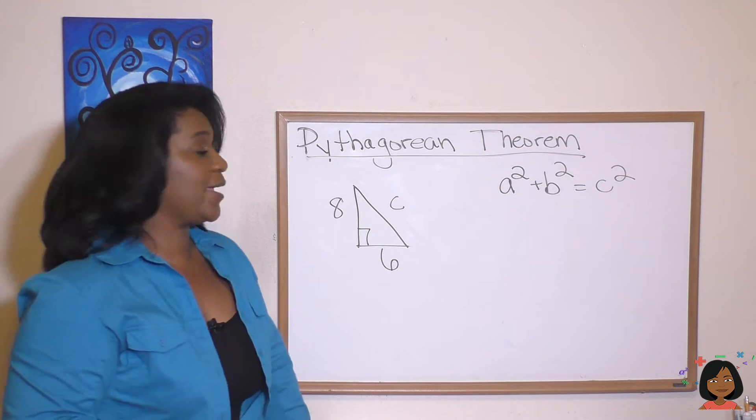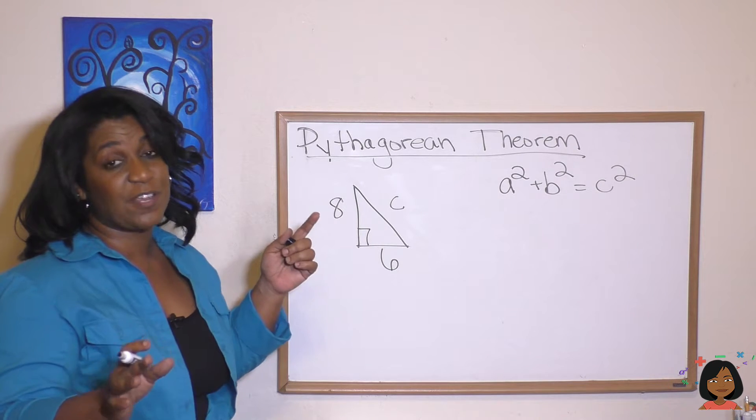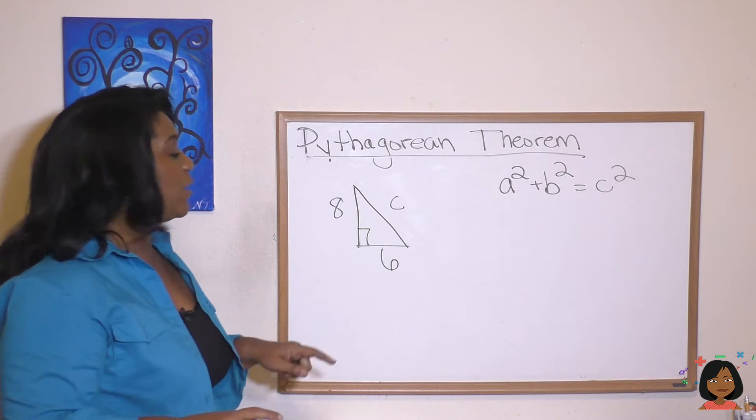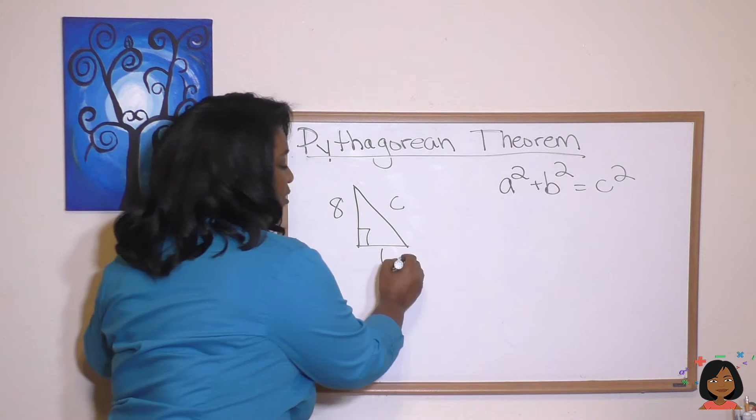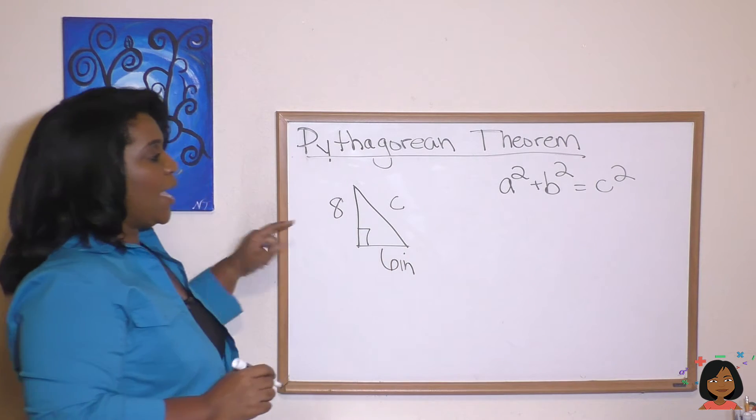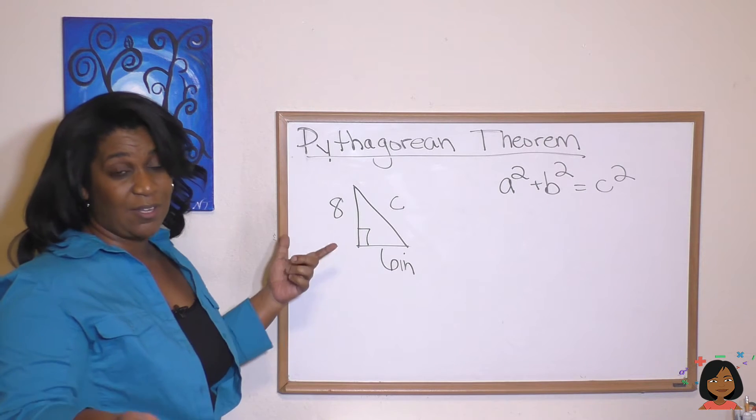Now let's try it with some actual numbers. Take a look at this right triangle. And remember, the Pythagorean theorem only applies to right triangles. So we have a leg that's 8 and a leg that is 6. Let's actually label them inches. And we need to find the hypotenuse, the c.